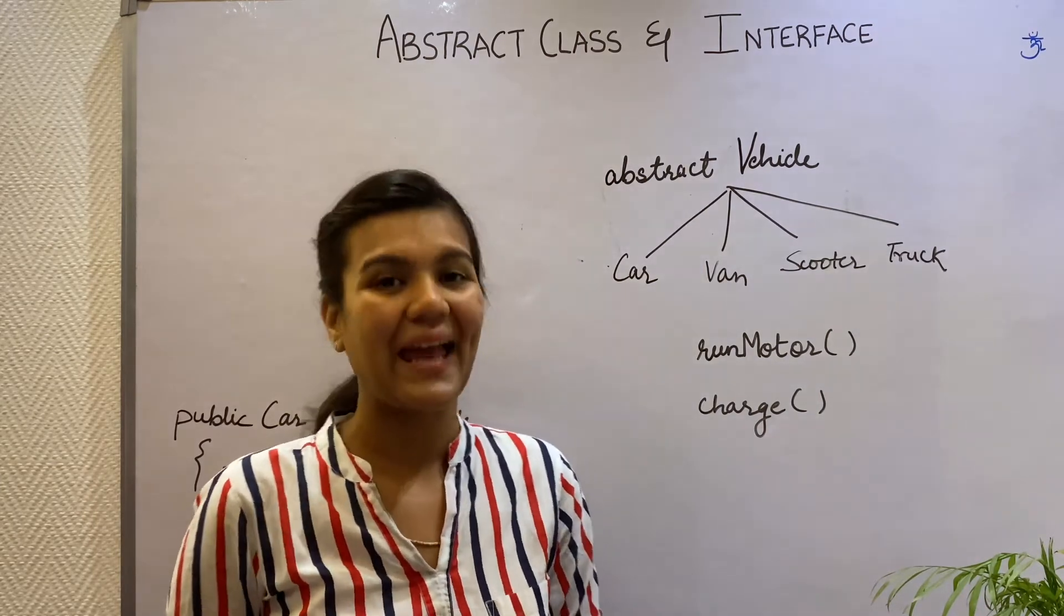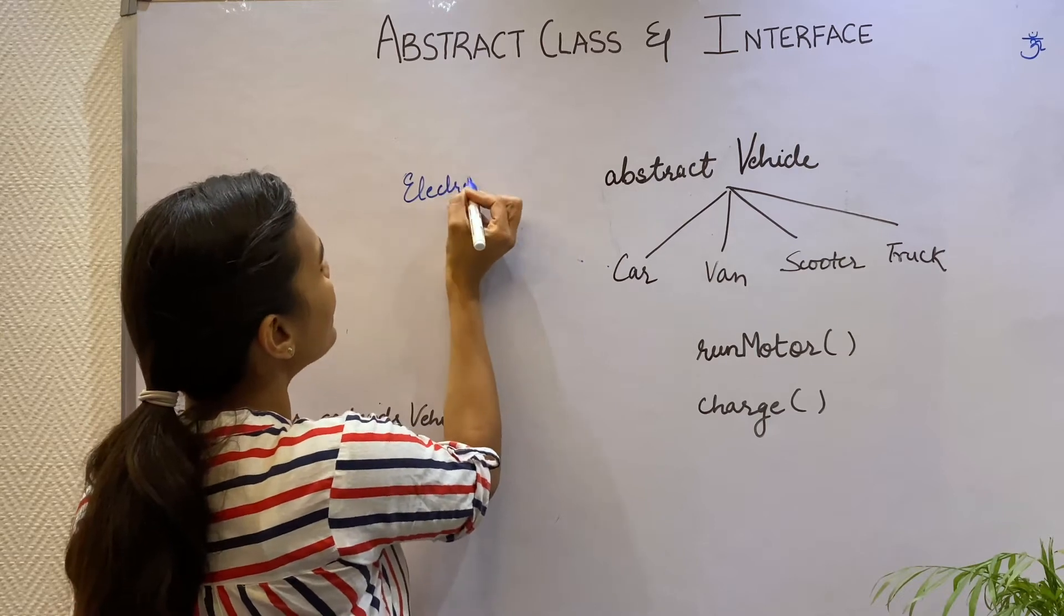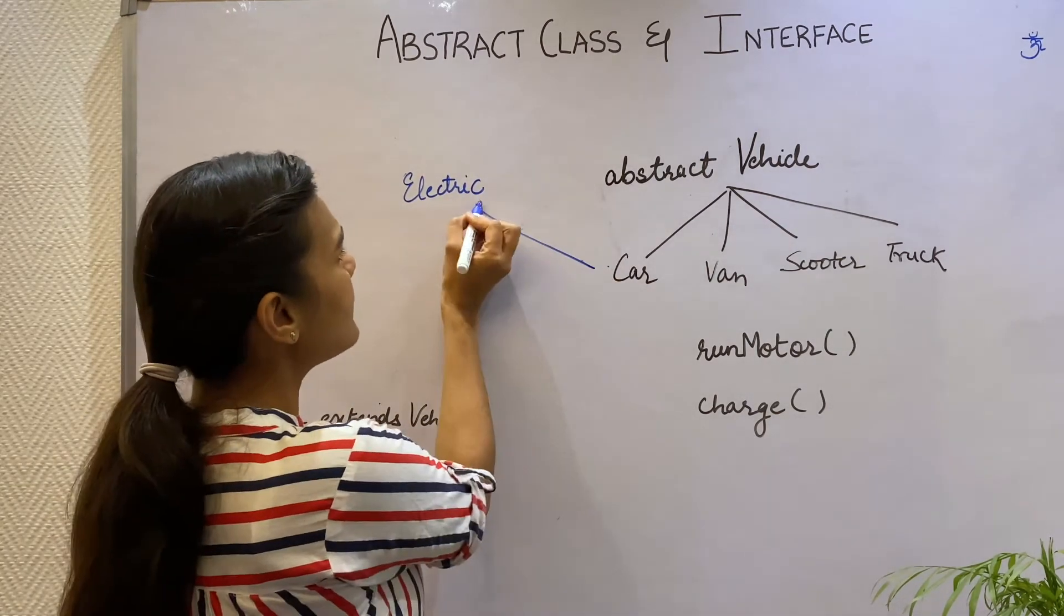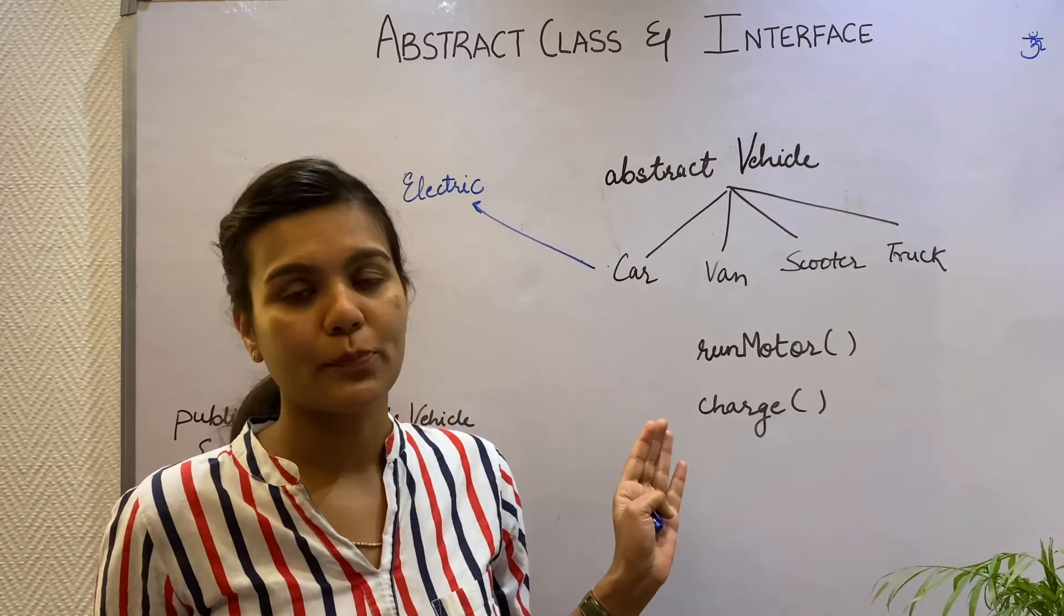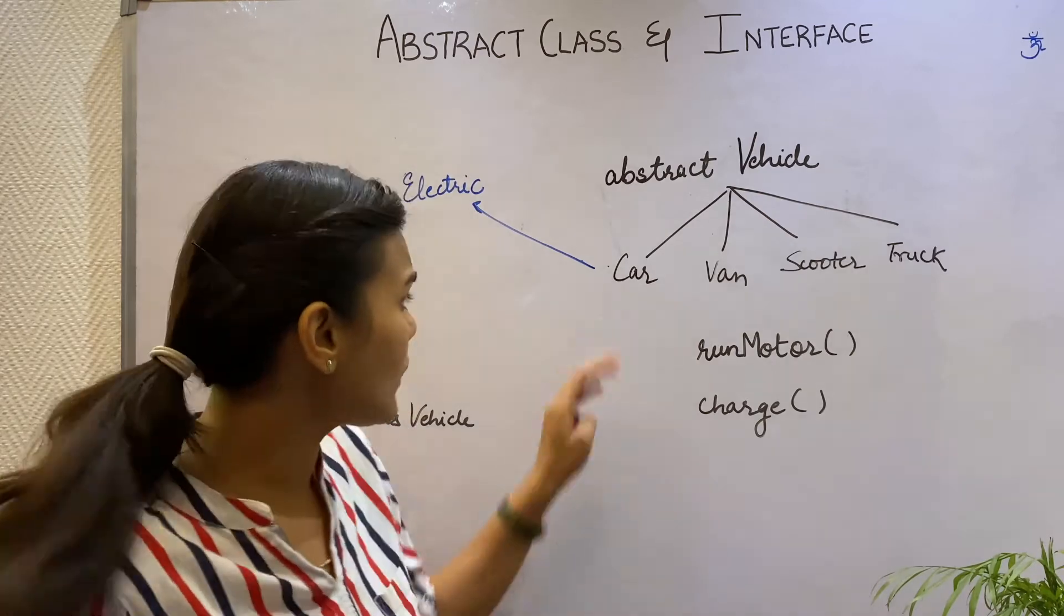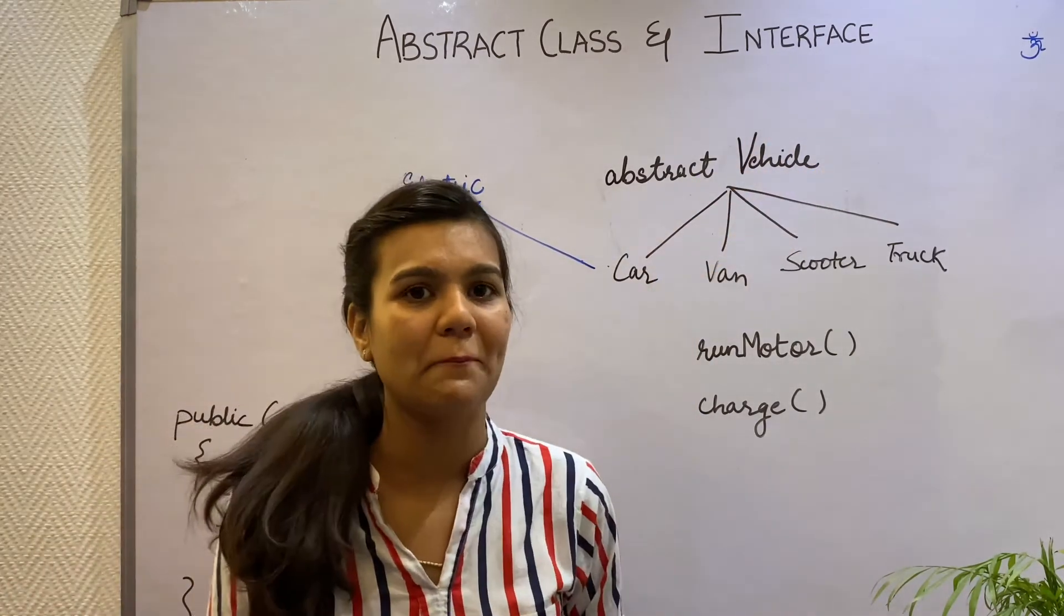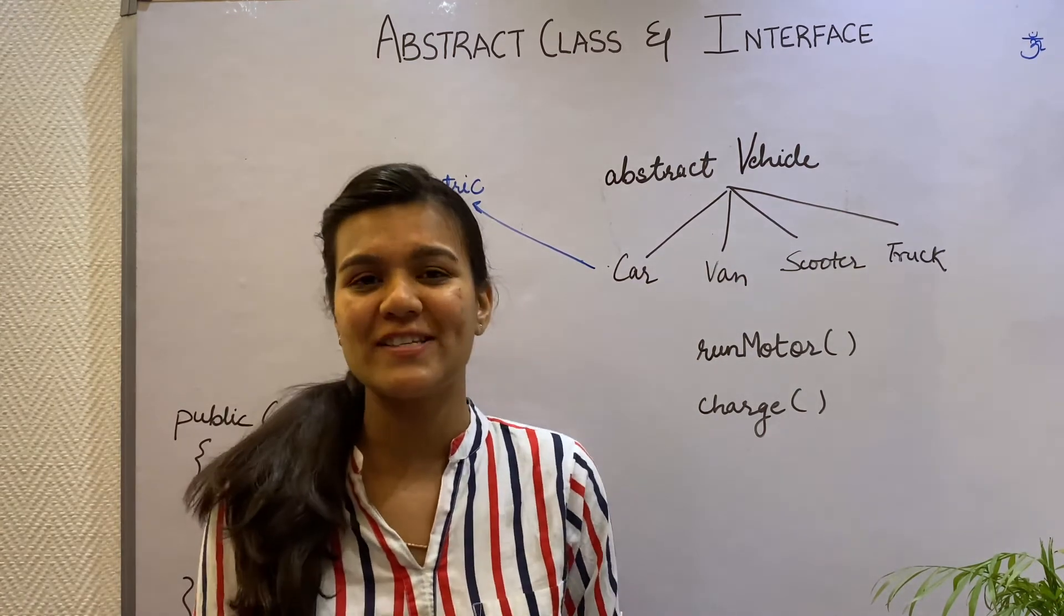Well, I can do one thing. I can make an Electric class and the Car class can extend this Electric class. Oh but I forgot, Java does not provide multiple inheritance, so Car cannot extend Electric and Vehicle at the same time. Where am I going with all of this? Well, I am going to my interfaces for rescue.